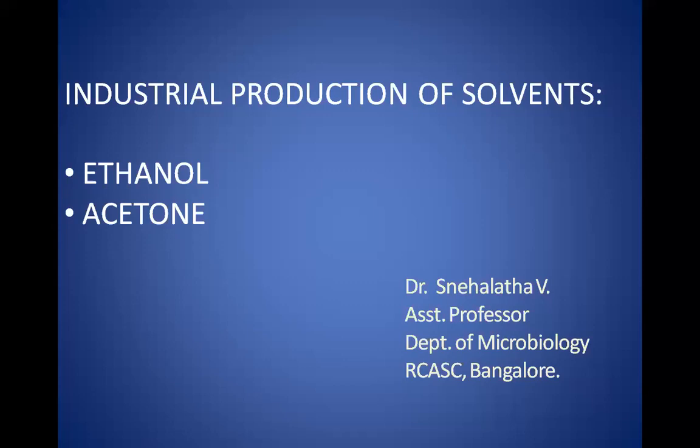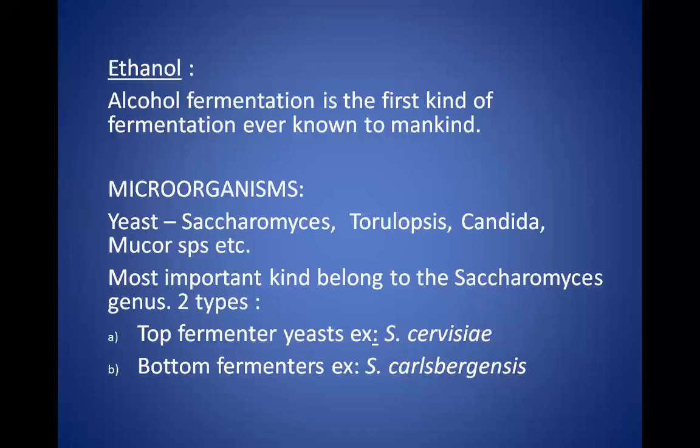Ethanol is produced by fermentation of sugars using yeasts. It is a neurotoxic psychoactive drug and one of the oldest recreational drugs used by humans — it can cause alcohol intoxication when consumed in sufficient quantity. Ethanol is a volatile, flammable, colorless liquid with a slight chemical odor, used as an antiseptic, solvent, and fuel. Due to its low freezing point it is also the active fluid in post-mercury thermometers. Its molecule is a simple one: an ethyl group linked to a hydroxyl group.